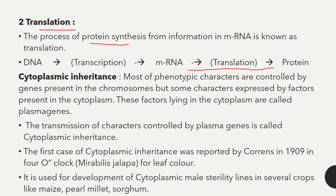The next topic is cytoplasmic inheritance. Most phenotypic characters are controlled by genes present in the chromosomes, but some characters are expressed by factors present in the cytoplasm. These factors lying in the cytoplasm are called plasma genes.